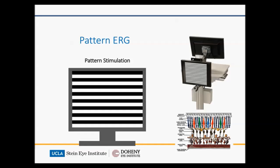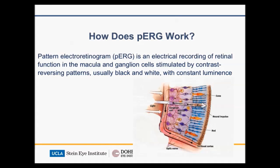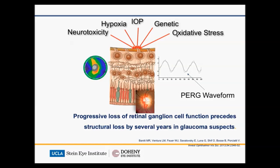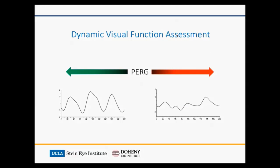A quick word about electrophysiology and glaucoma. This is a new office-based system by Diopsis — the stimulus pattern flickers back and forth and the PERG, or pattern ERG, measures the response. The PERG is thought to tease out ganglion cell and macular function. Progressive loss of retinal ganglion cell function may actually precede structural loss as measurable by OCT by up to several years in glaucoma suspects converting to glaucoma. Based on work out of Bascom Palmer, the PERG signal can anticipate an equivalent loss of OCT signal by up to eight years in glaucoma suspects converting to glaucoma.